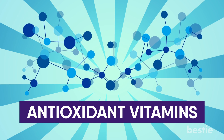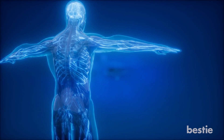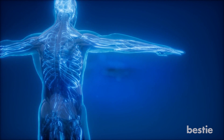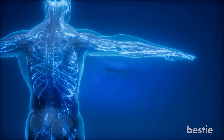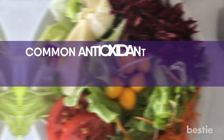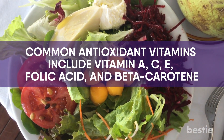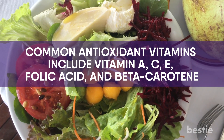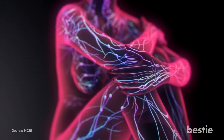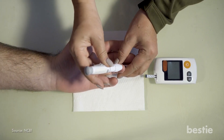Your body does not produce antioxidant vitamins naturally, so it is essential to include dietary sources of them in your daily intake of food. Common antioxidant vitamins include vitamin A, C, E, folic acid and beta carotene. Vitamin A is particularly important for improving the immune system, eye health, tissue repair and cholesterol levels.